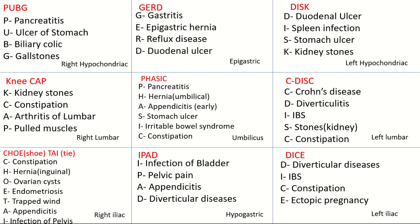These mnemonics might be a little confusing at first, but if you repeat them a few times they'll get easier. The PUBZ one is easiest — the PUBZ character is wearing a kneecap for the right lumbar region, shoes and a tie for the right iliac region, and plays on an iPad for the hypogastric region.